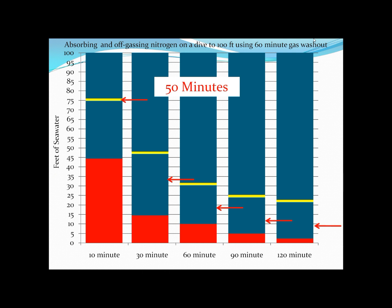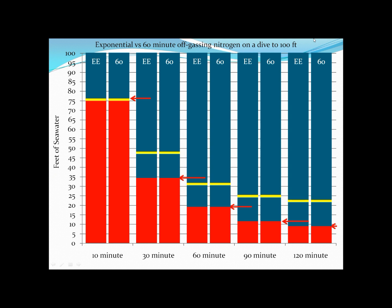As we approach 60 minutes: under EE washout, that 10-minute compartment had zero feet of seawater nitrogen in it. But on this model using 60-minute washout, after 60 minutes it has only done one half time — going halfway from the 75 feet of seawater nitrogen loading it had at surfacing to zero, which means about 37.5 feet of seawater nitrogen loading remains. To really see these differences we need to put the two charts side by side, comparing EE washout to 60-minute washout after a dive to 100 feet.